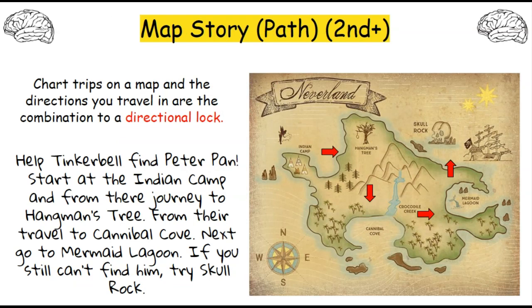This is a map story path type puzzle, appropriate for second grade and up. It's a mental puzzle so it works for digital or physical breakouts. You chart a trip on a map and the directions you travel are the combinations to the directional lock. In this example, help Tinkerbell find Peter Pan: start at the Indian camp, journey to Hangman's Tree, travel to Cannibal Cove, next go to Mermaid Lagoon, and if you can't find him there try Skull Rock — giving you your four directions. It requires a strong enough reader in the group to read the story and locate places on the map.